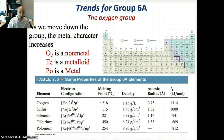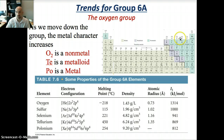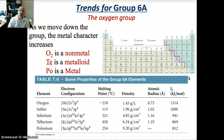Turning to the oxygen group: all of Group 6A is solid except for oxygen, which is a gas. Group 6A is interesting because it contains metals, non-metals, and metalloids. I encourage you to read this section and understand more about the properties of oxygen and sulfur.